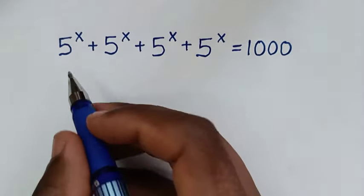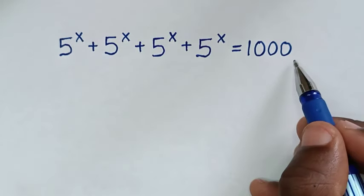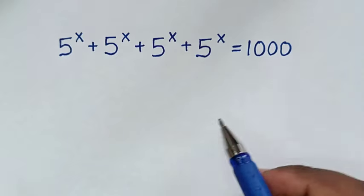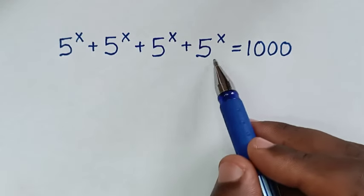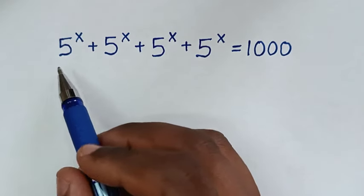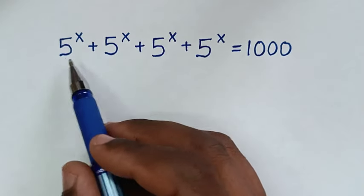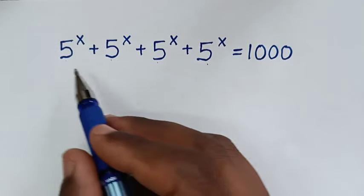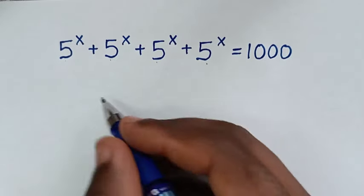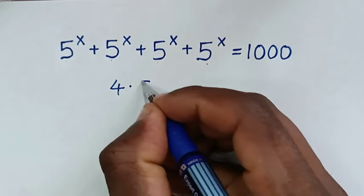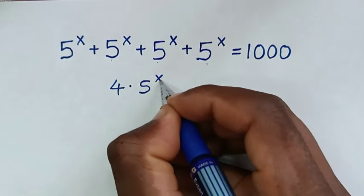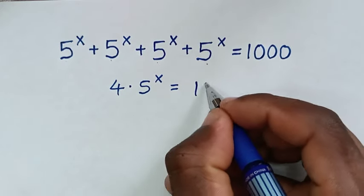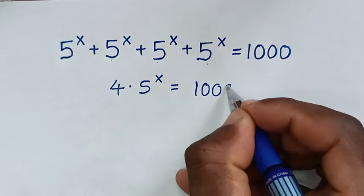To find the value of x from this equation. On the left side we have 5 power of x appearing 1, 2, 3, 4 times. So this is the same as 4 times 5 power of x, which is equal to 1000.